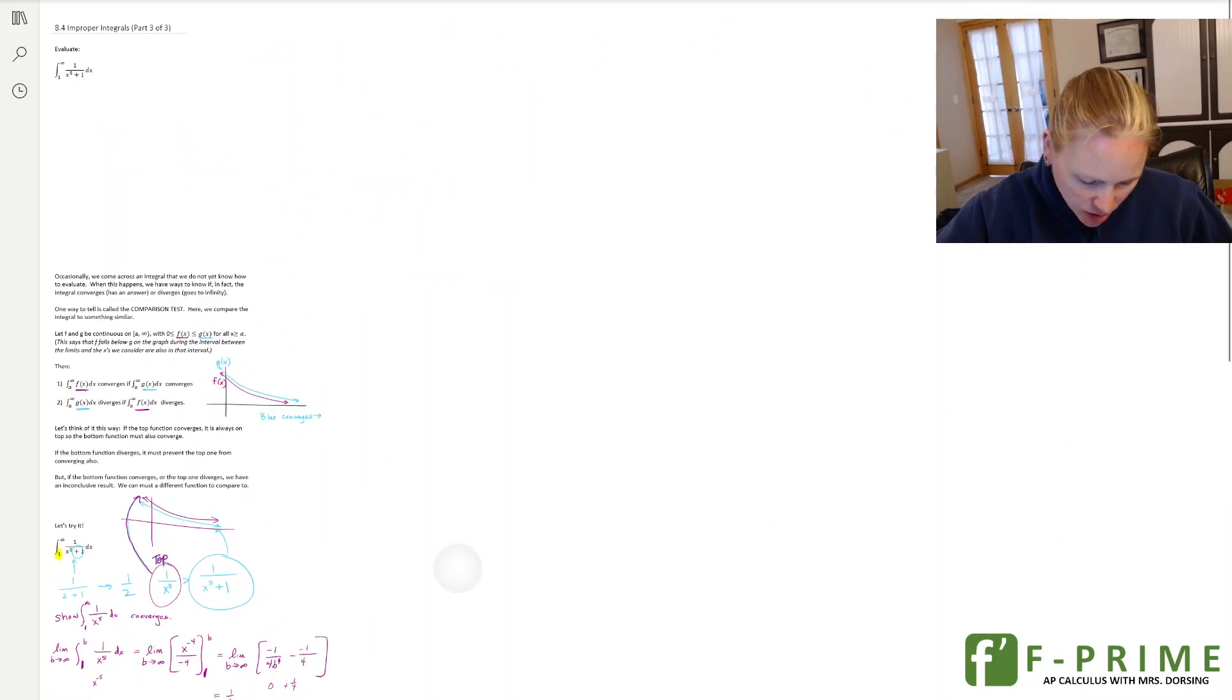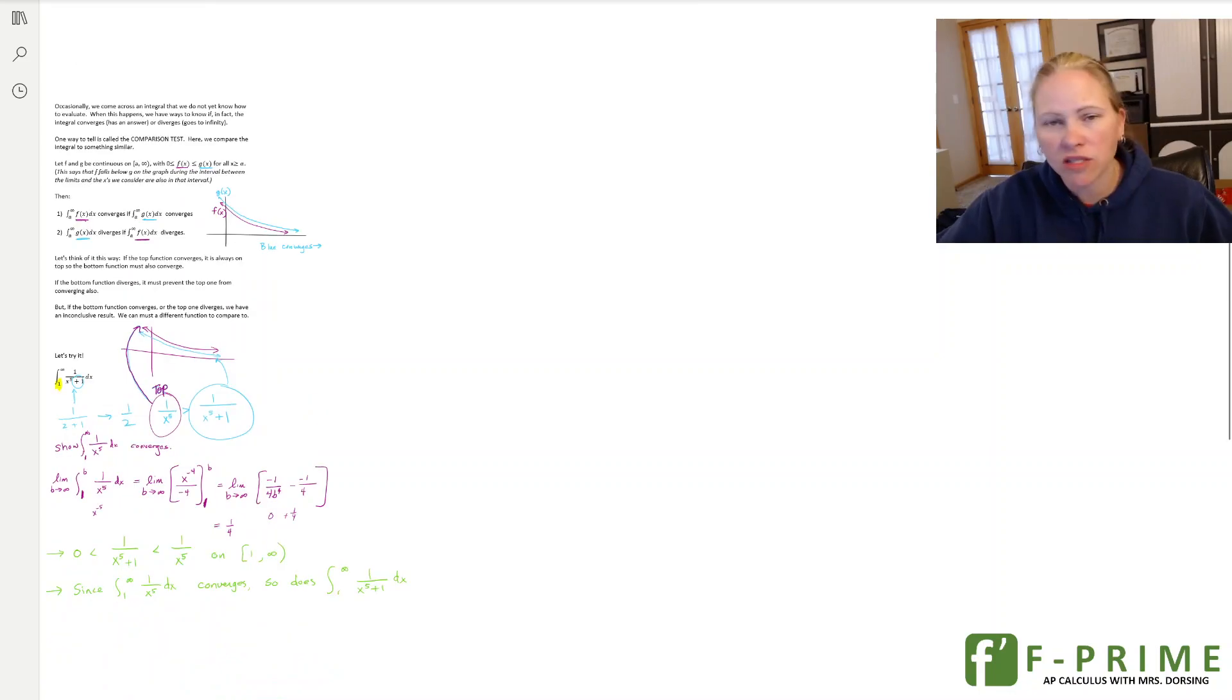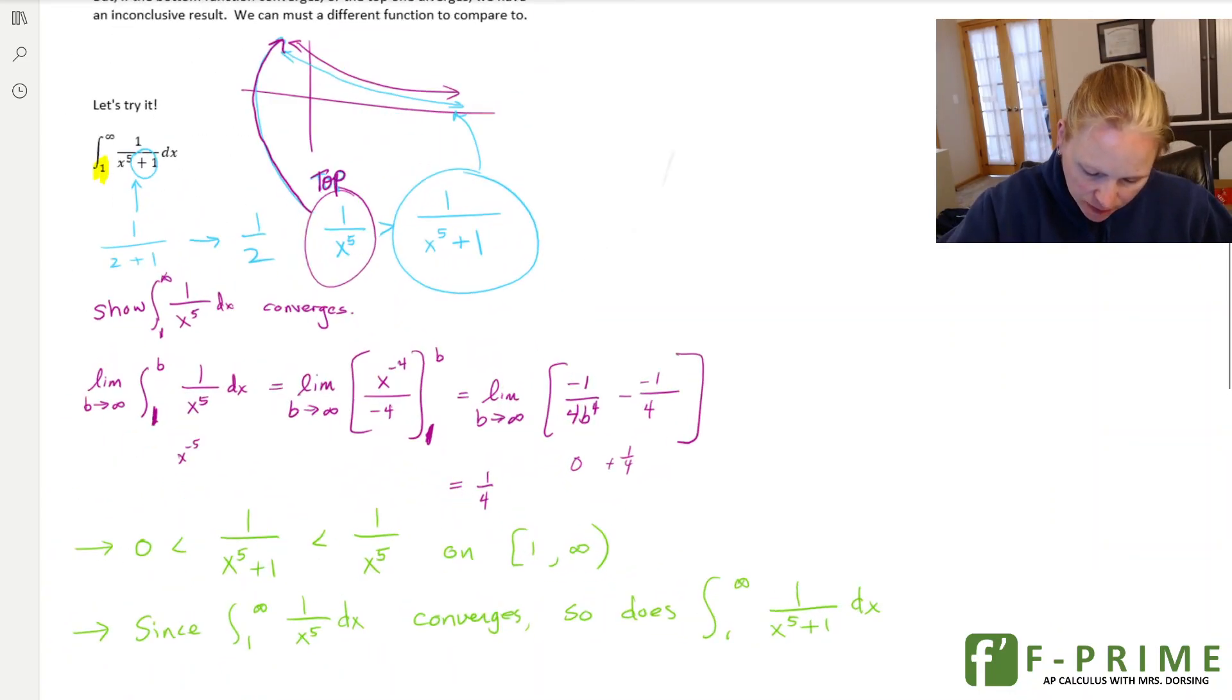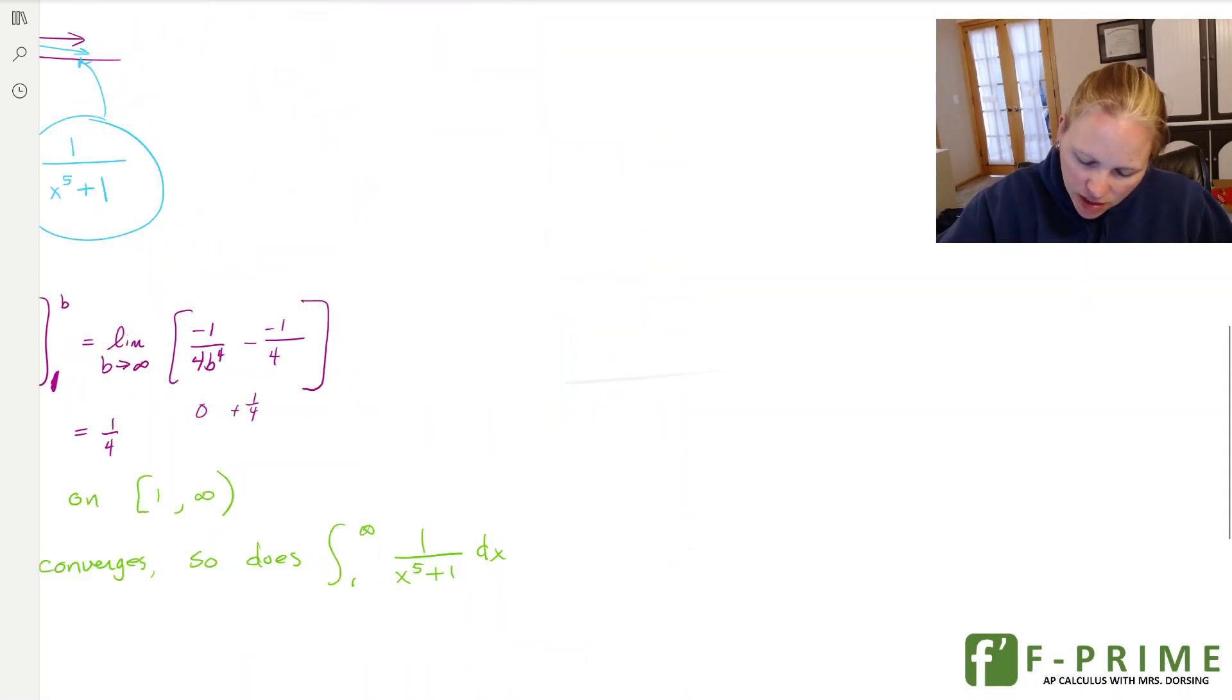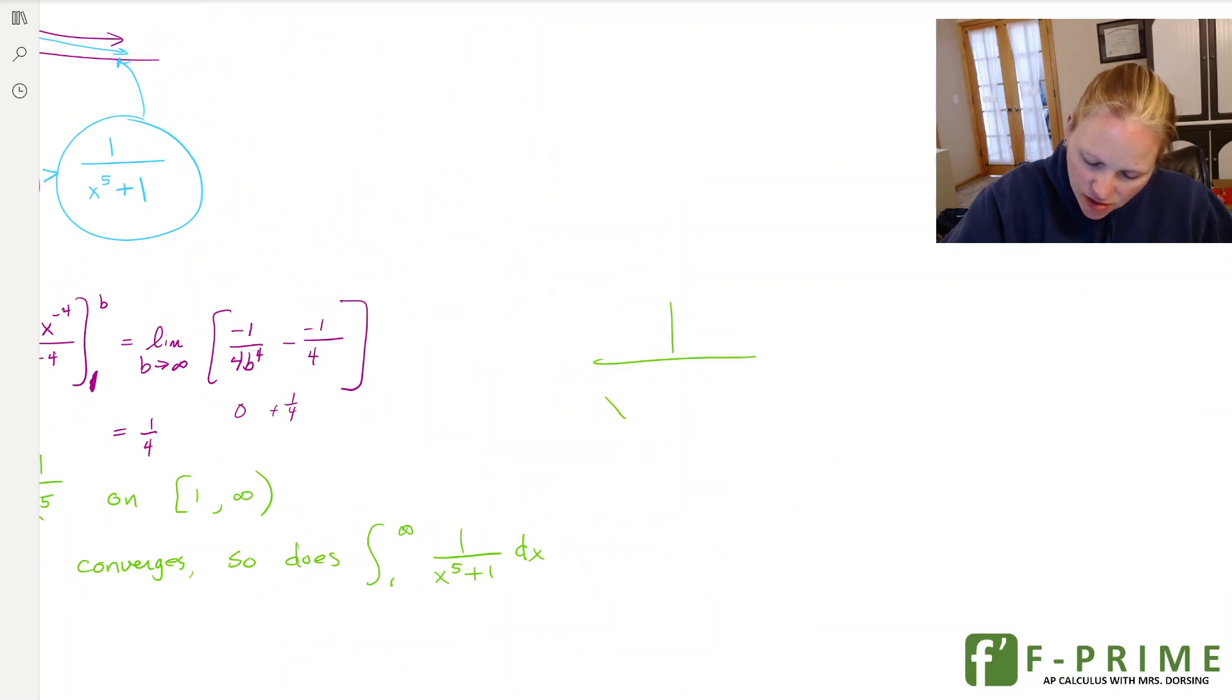So let's see what else we can do with this. When we're doing our comparison test, how do we know what to compare to? Well, most of the time you're going to have a function that looks like this. And if you just remove the plus 1, you're probably going to be okay, or the plus whatever. Now if it was a minus value, then you'd have to be a little bit more careful. Because when we have the minus, if you had x to the 5th minus 1, well when you remove that minus 1, you're making the denominator bigger.